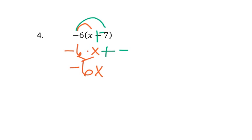what is negative 6 times negative 7? Well, negative 6 times negative 7 is positive 42.